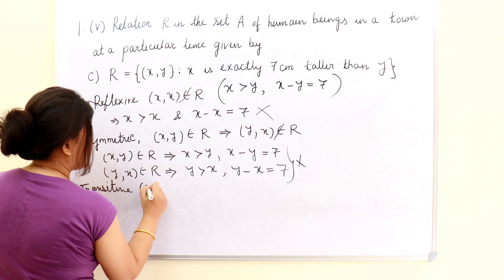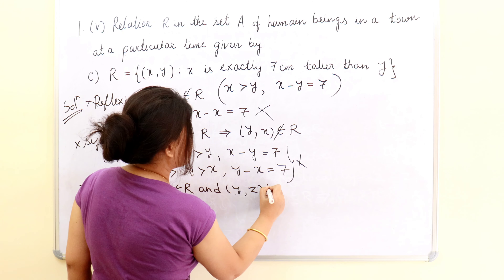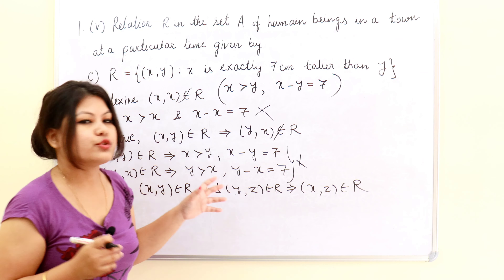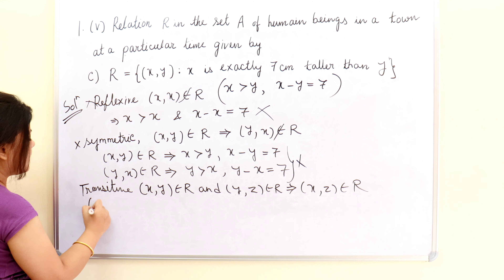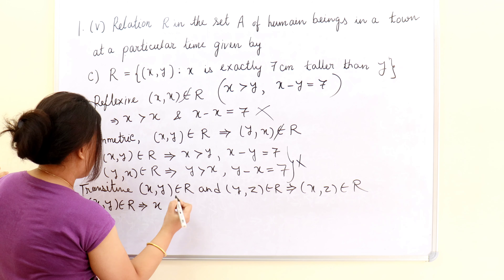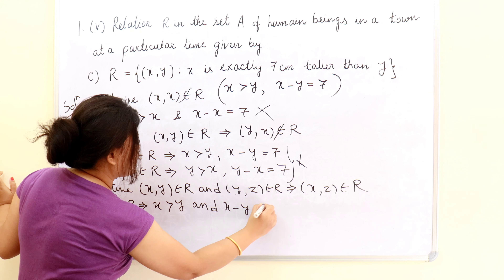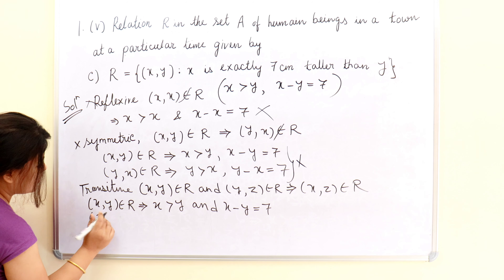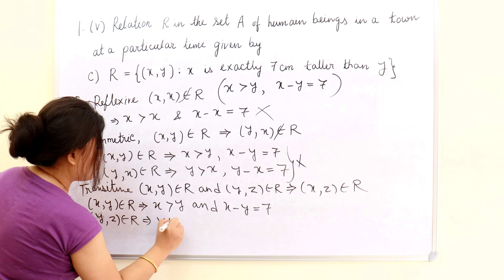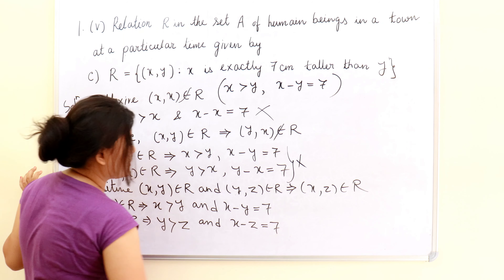For transitive, the condition is: (X,Y) belongs to R and (Y,Z) belongs to R implies (X,Z) should belong to R. So first: (X,Y) belongs to R means X is greater than Y and X − Y = 7. Then (Y,Z) belongs to R means Y is greater than Z and Y − Z = 7.